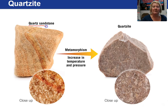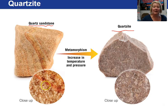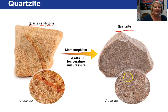Here we have a quartz sandstone, a detrital sedimentary rock. We are going to metamorphose it into a quartzite. Notice in this close-up, you have individual sand grains in the quartz sandstone that are cemented together. When it becomes metamorphosed, you don't have those individual grains anymore — they are fused together.